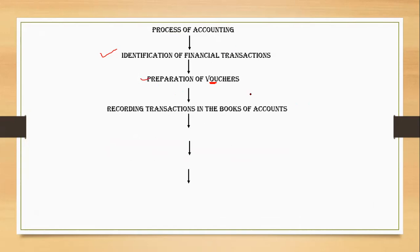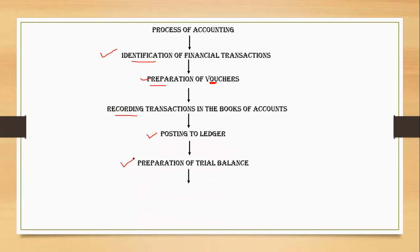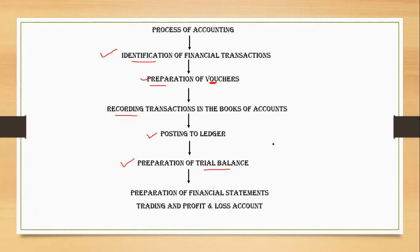Once transactions are identified and vouchers are prepared, we need recording in the books of accounts. After recording comes classification, which involves posting to the ledger — the book of accounts where all ledger accounts are prepared and balanced. Next is the preparation of the trial balance, which lays the foundation for the financial statements: the trading and P&L account and the balance sheet.